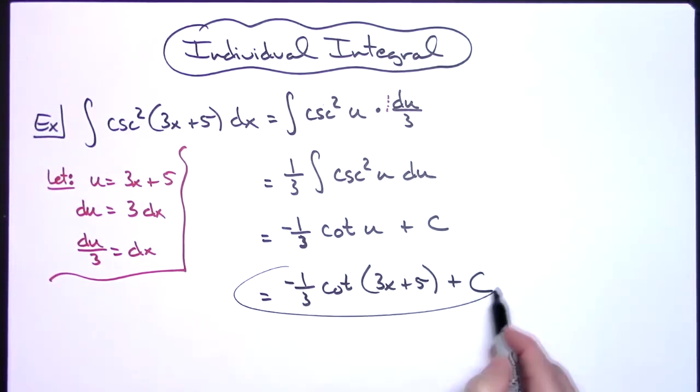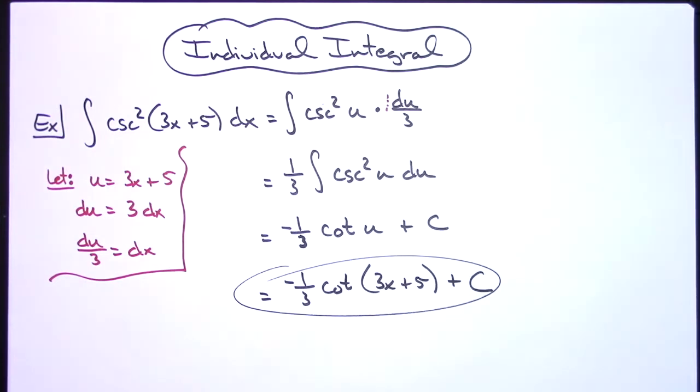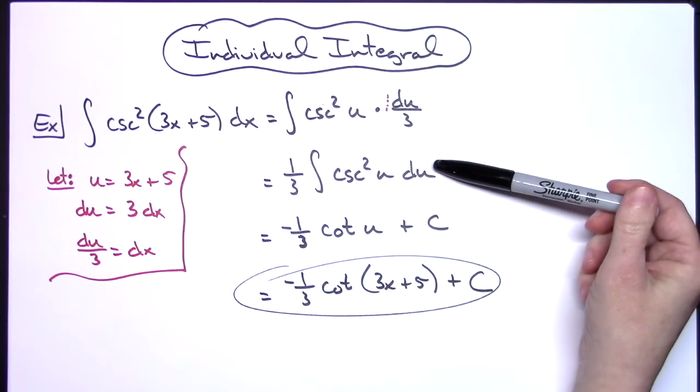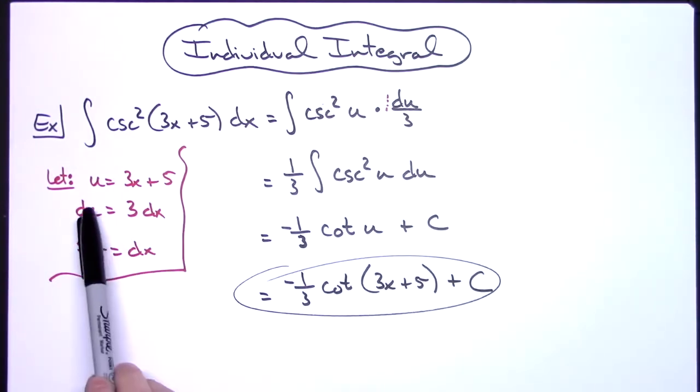So definitely a straightforward u-substitution there. You have to have the integral of cosecant squared u memorized. And definitely on the u-substitution, pick that inside portion of that function.